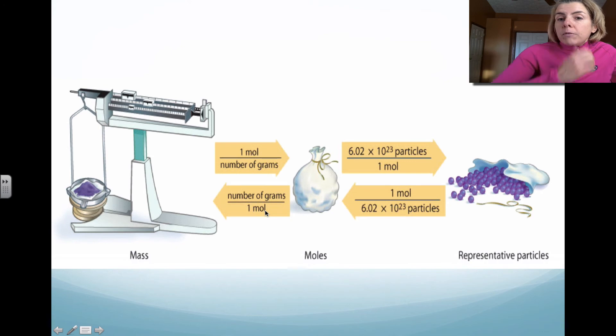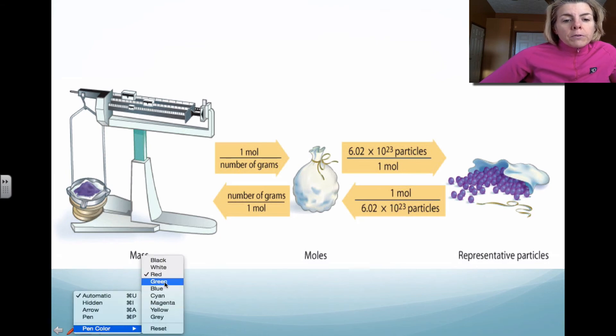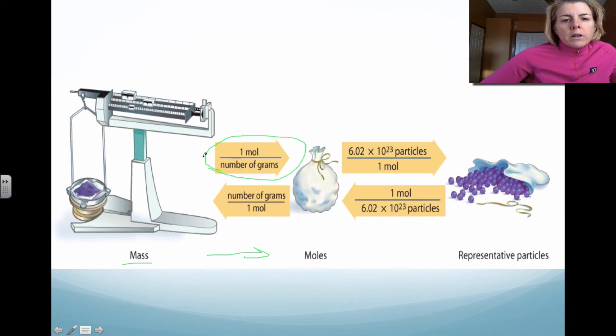I'm going to leave you with this diagram. And this diagram is essential for this part of the chapter. It's a good way to determine which type of conversion factor you're going to use. So notice if you go from mass to moles, you're essentially going to use this conversion factor. So one mole divided by the number of grams for that substance. If you're going the opposite direction, you're going to use the opposite arrow.